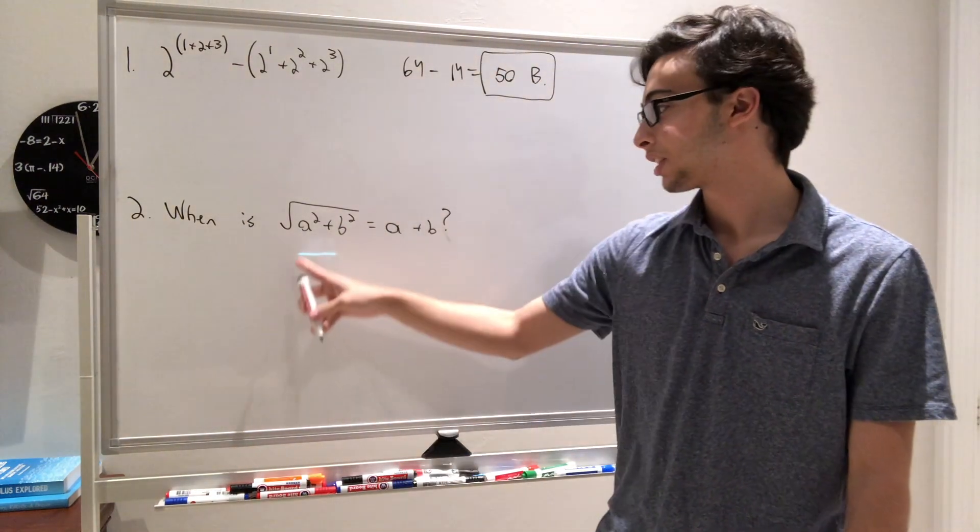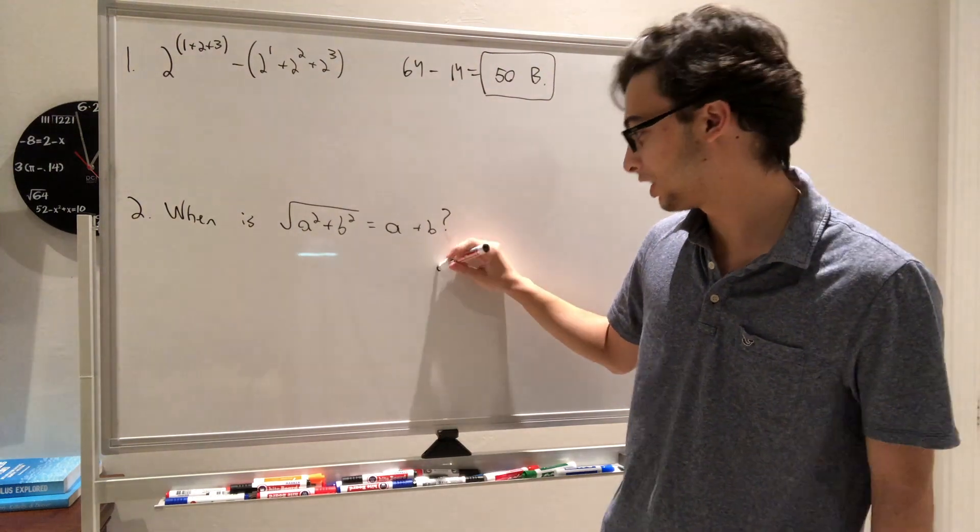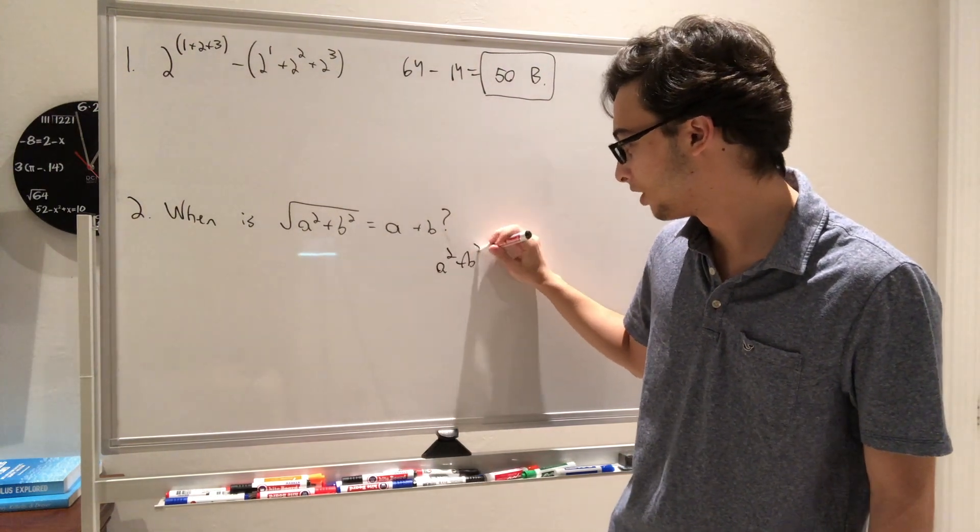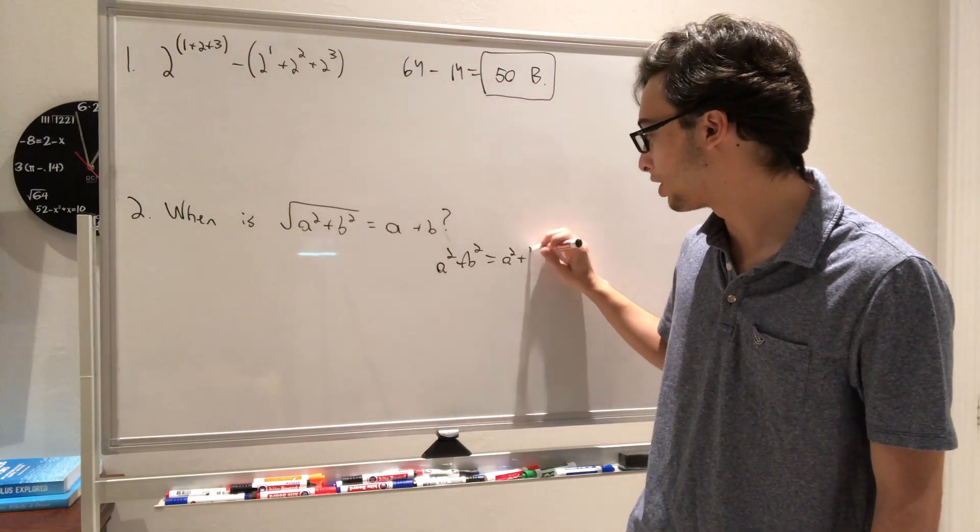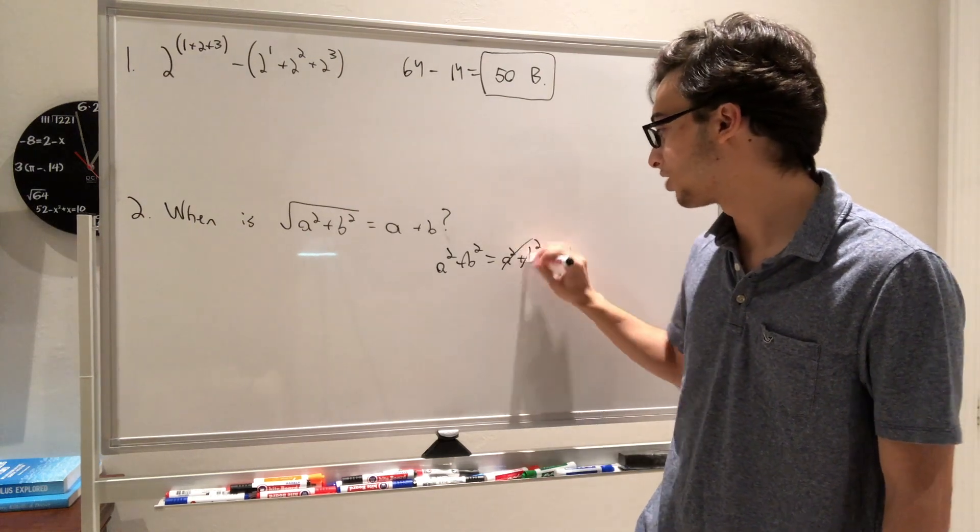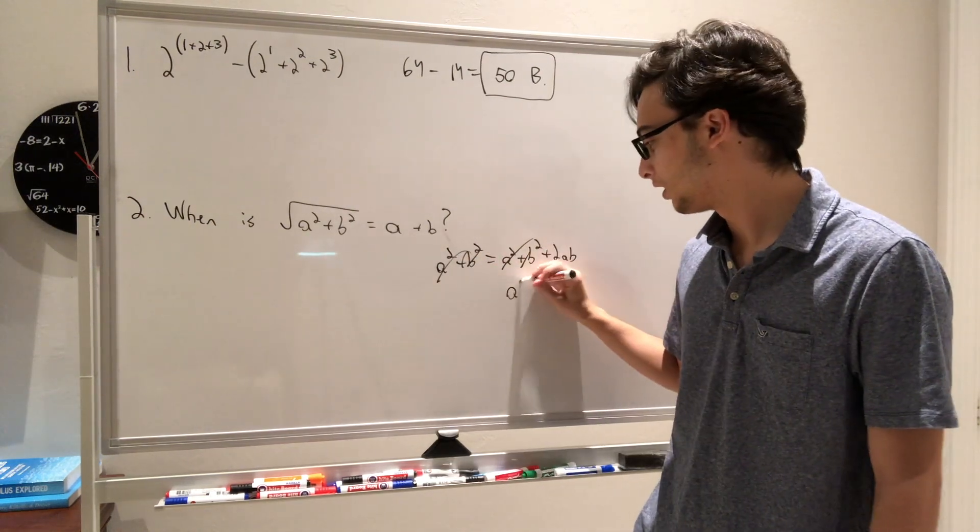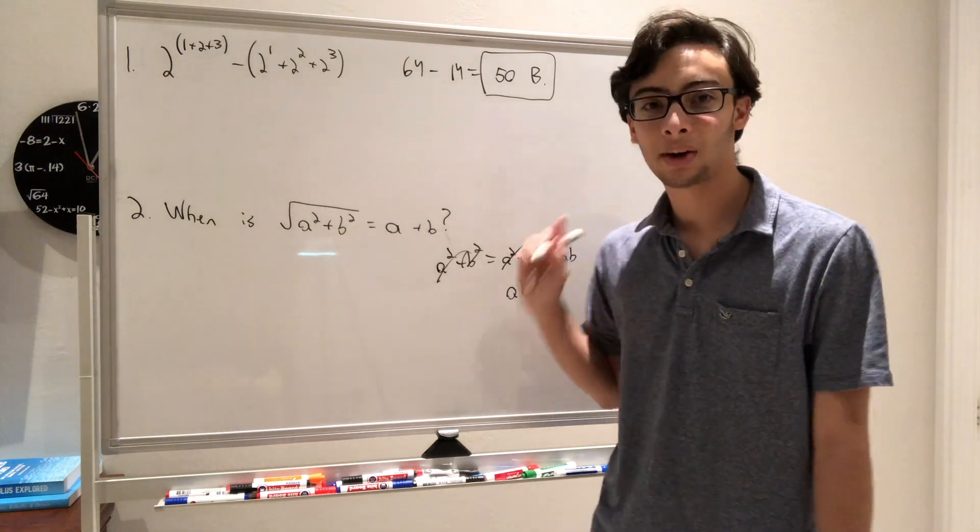Moving on to question 2, we have this equation. So we can square both sides and get a squared plus b squared equals a squared plus b squared plus 2ab. Clearly, these cancel, and we get ab has to equal 0. However, we're not quite done.